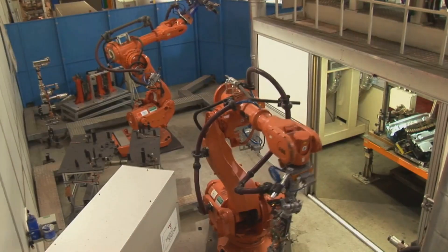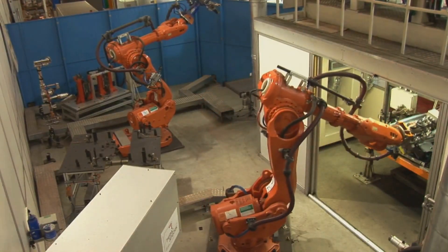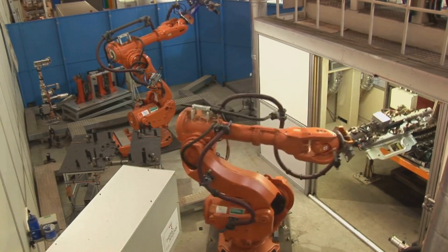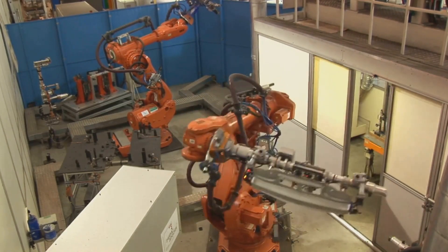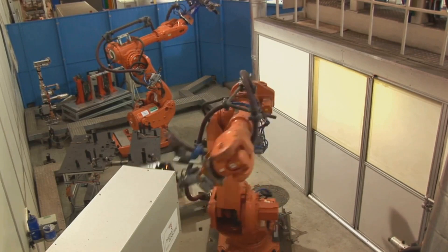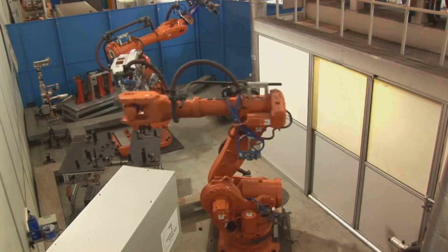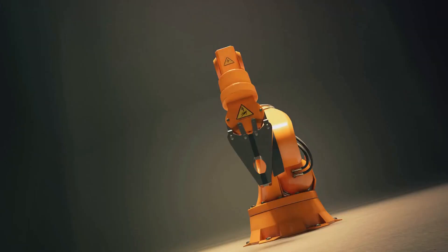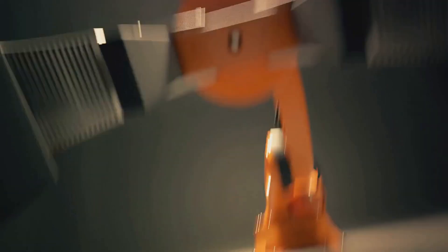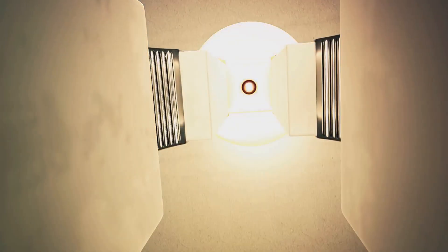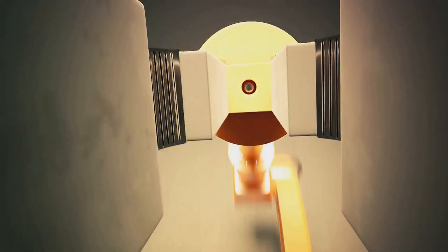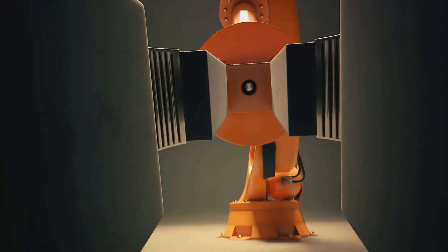Fast forward a few centuries and we find ourselves in the industrial age. The assembly line was the playground for the first industrial robots. These mechanical marvels, albeit rudimentary, were able to perform repetitive tasks with speed and precision that humans could not match. But these were mere machines, devoid of intelligence, performing tasks based on pre-programmed instructions.